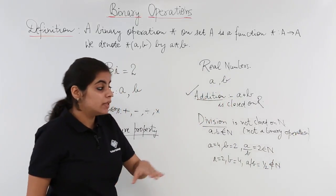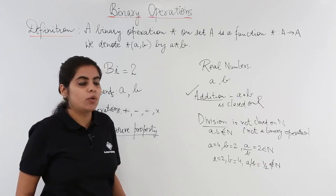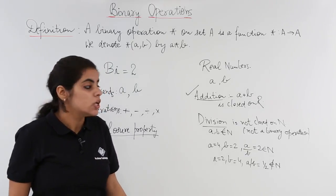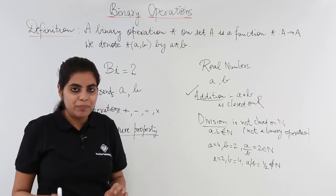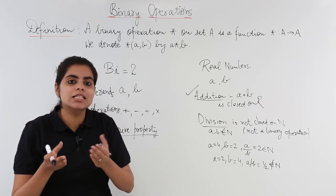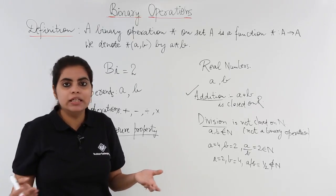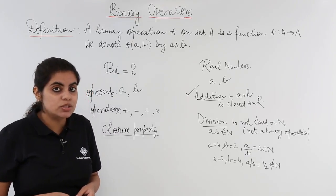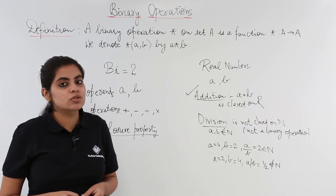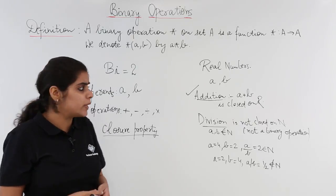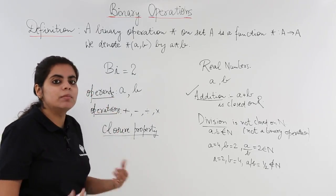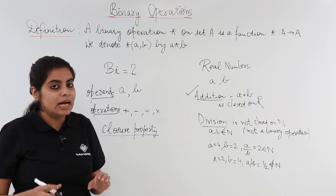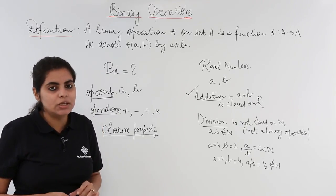But the same division operation is closed and is a binary operation on real numbers because 1 upon 2 gives 0.5, which is a real number. Any operation you take depends on what set of numbers you're taking - integers, real numbers, or natural numbers. In this video, we saw that binary means 2, so we take two operands at a time, and the closure property is very much related to the study of binary operations.